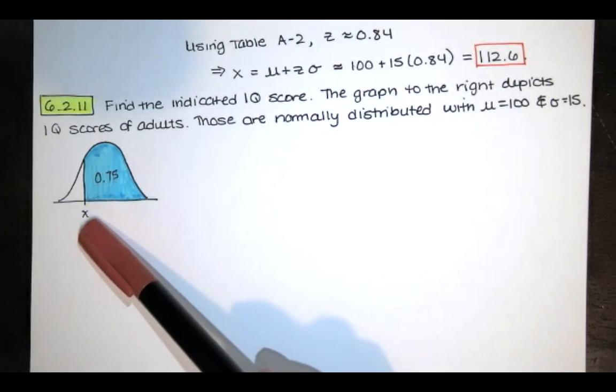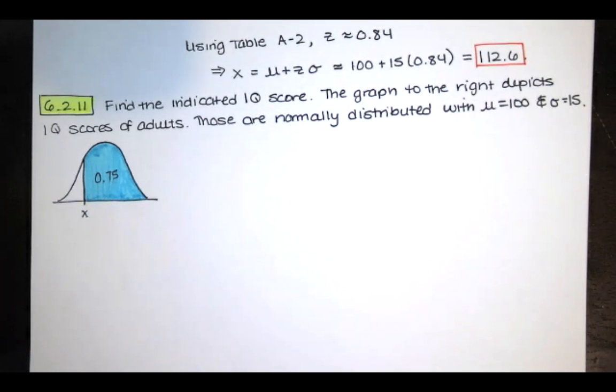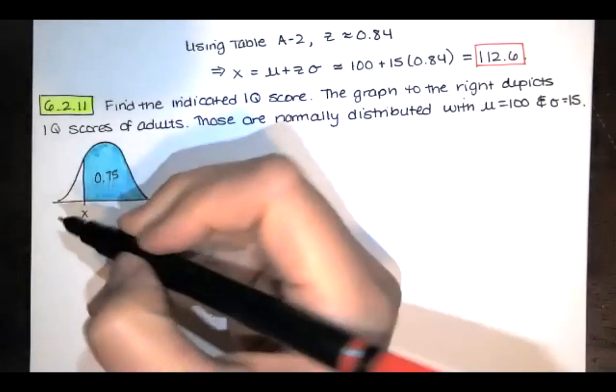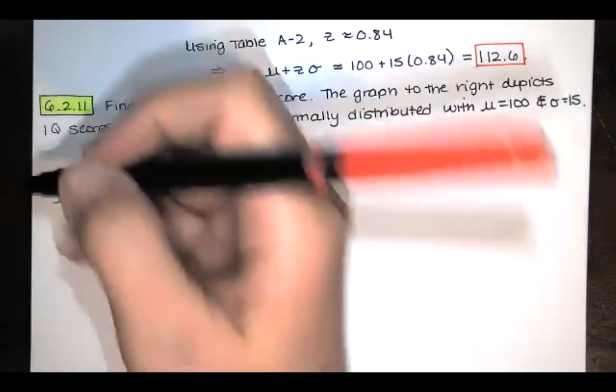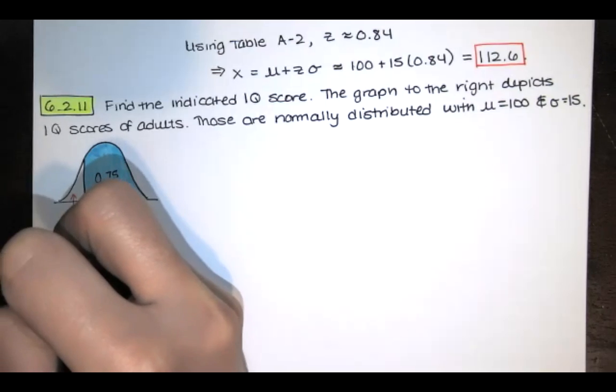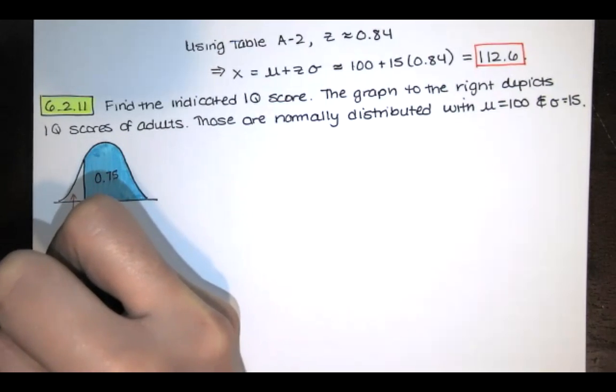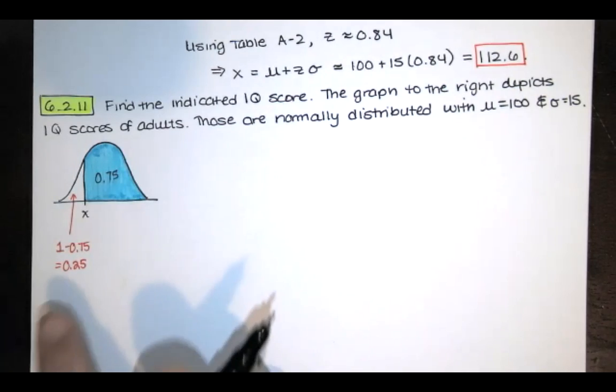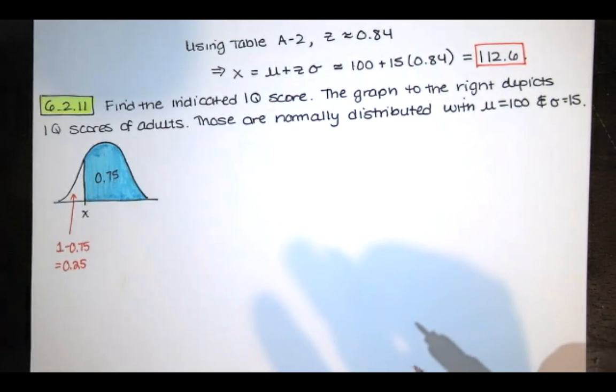In order to find this score, I need the area to the left, not the right. Since this is 0.75, this area must be 1 minus 0.75, so it must equal 0.25, because that area plus that area has to be 1.